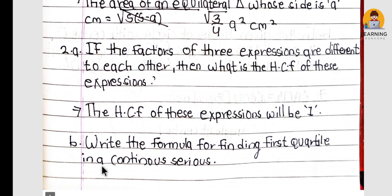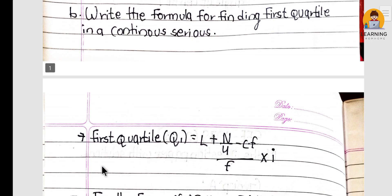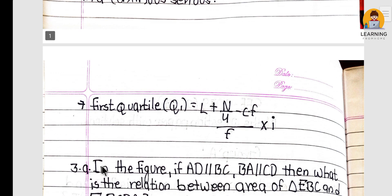Question 2(a): If the factors of three expressions are different from each other, then what is the HCF of these expressions? The HCF will be 1. Next: Write the formula for finding the first quartile Q1 in a continuous series.